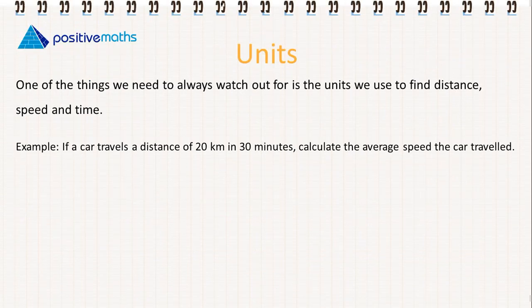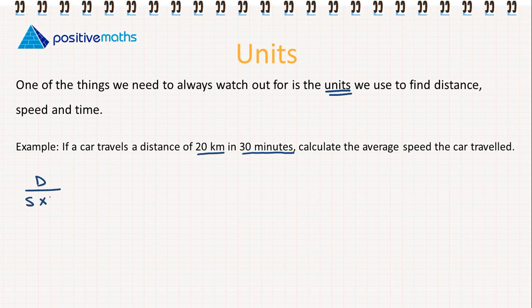One of the things we need to always watch out for is the units that we use to find distance, speed, and time. Let's look at this example. If a car travels a distance of 20 kilometres in 30 minutes, we need to calculate the average speed the car travelled. So the first thing we do is we write out our triangle: distance over speed by time. We are looking for the speed, so we write out our formula. Speed is equal to distance over time.